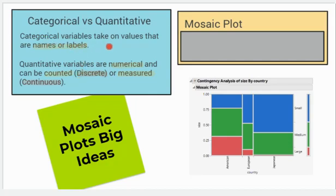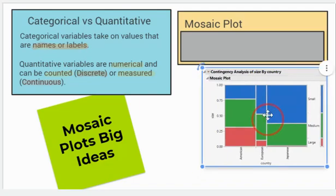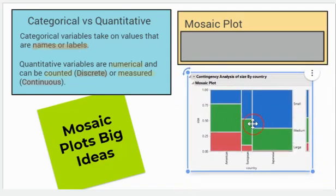But categorical variables take on values that give us names or labels. Quantitative variables are numerical and can be counted or measured. All right, let's move over to mosaic plots. Now this is a mosaic plot right here.